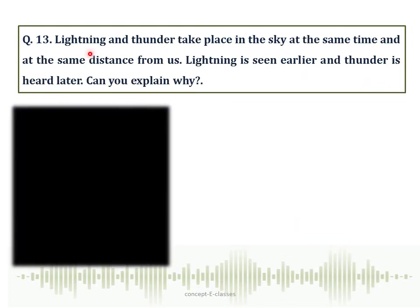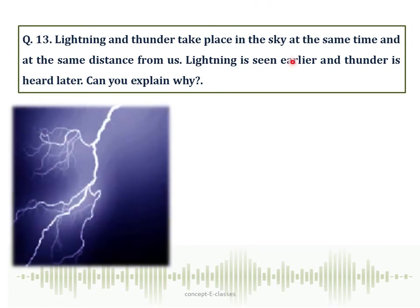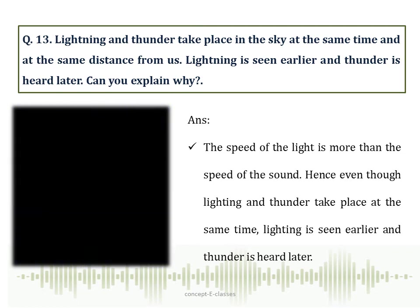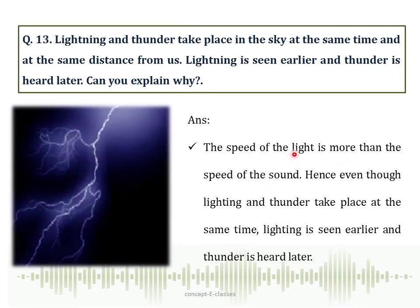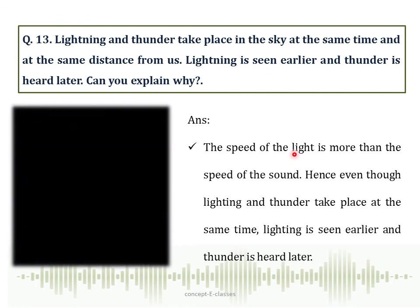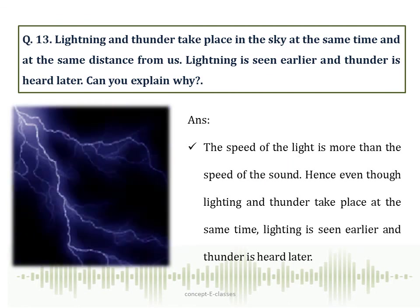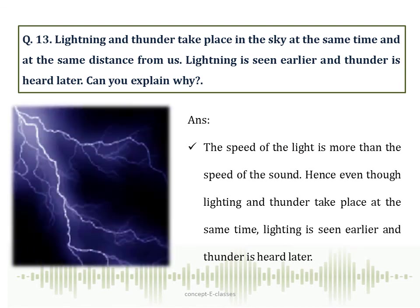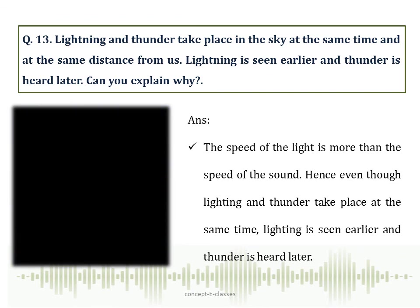Question number 13: Lightning and thunder take place in the sky at the same time and at the same distance from us. Lightning is seen earlier and thunder is heard later — why? The speed of light is greater than the speed of sound. The speed of light is 3 × 10⁸ meters per second, while the speed of sound is 340 meters per second. Hence, lightning is seen earlier than thunder, which is heard later.